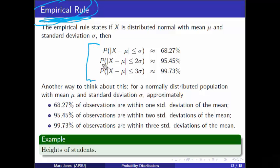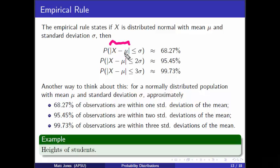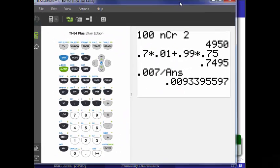We'll actually compute these using a normal distribution. This first one: the probability that the distance between the random variable x and the mean — that's what the absolute value bars give us, the absolute difference between those two things — the chance that absolute difference is less than or equal to one standard deviation is about 68.27%. Let's pull out our calculator and check that out.